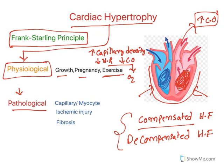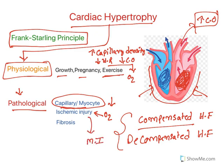In pathological cardiac hypertrophy, there is a decreased capillary-to-myocyte ratio, meaning decreased blood supply and decreased oxygen delivery, which results in ischemic injury. Ischemic injury leads to myocardial infarction and fibrosis, both of which result in cardiac muscle death. So hypertrophy occurs to accommodate excess congestion inside the heart, but it ultimately aggravates the condition of heart failure.